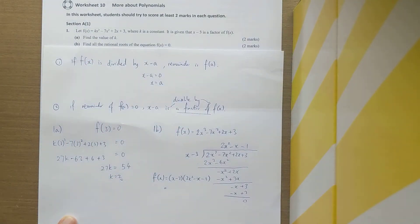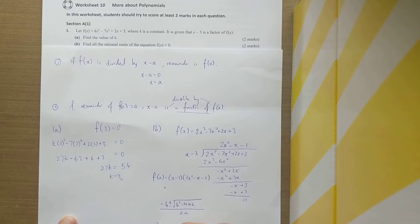The quadratic formula is negative b plus or minus square root of b squared minus 4ac over 2a. Now a is 2, b is negative 1, c is also negative 1. So negative of negative 1 is positive 1, plus or minus square root of b squared—that's negative 1 squared—minus 4ac over 2a.